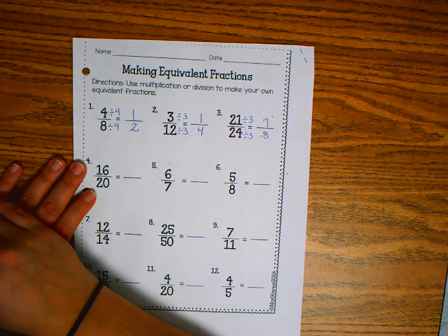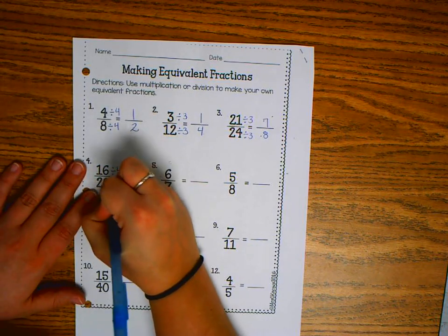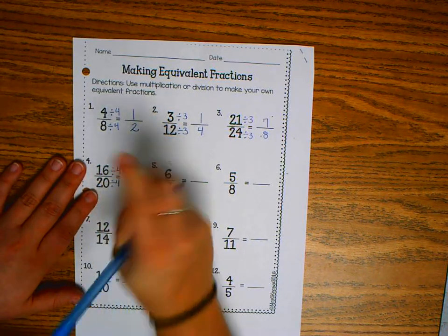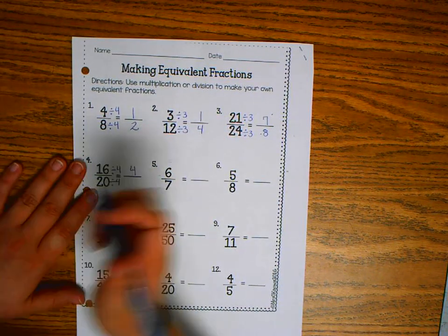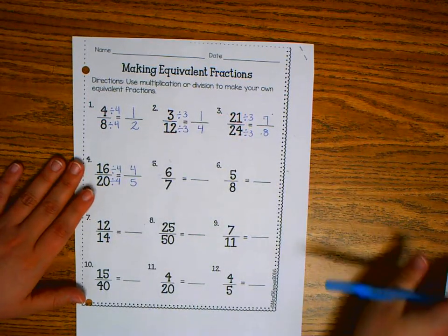16 twentieths. I could divide those by 4. Because 16 divided by 4 is 4, and 20 divided by 4 is 5.